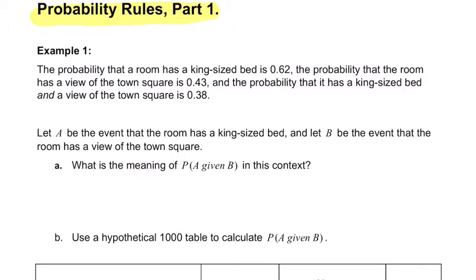So in example 1, we're told a couple of things. We're told that there's some probabilities. The probability that you get an awesome, huge, king-size bed is 0.62, and the probability that the room you're in has a view of the town square is 0.43, so that view is a little bit harder to get. And the probability that it has both essentially is 0.38. So a king-size bed and a view of the town square, which is the best, right? It's a nice view, a nice bed, that's the hardest to get.